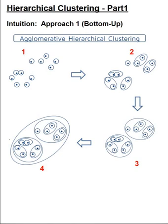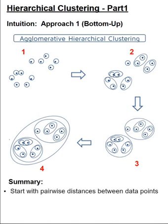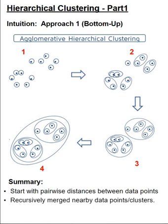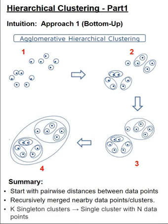So to summarize, we started with a pairwise distance between data points and we recursively merged all nearby data points and clusters, and we did a smooth transition of going from k singleton clusters to a single cluster with all the n data points.